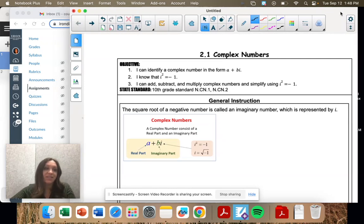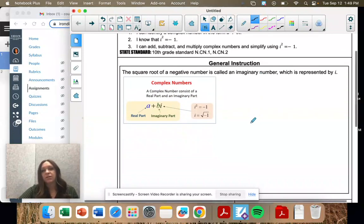Okay, so this section is on something called a complex number. A complex number happens when we have a negative under a square root.